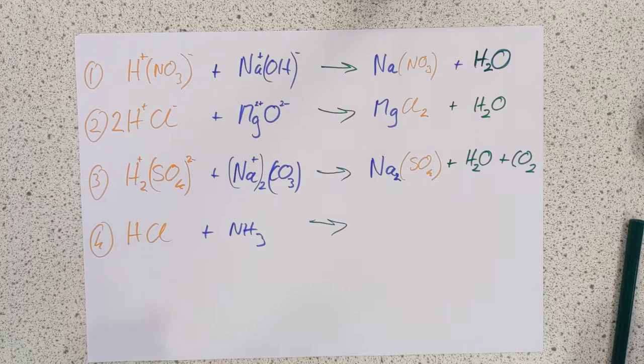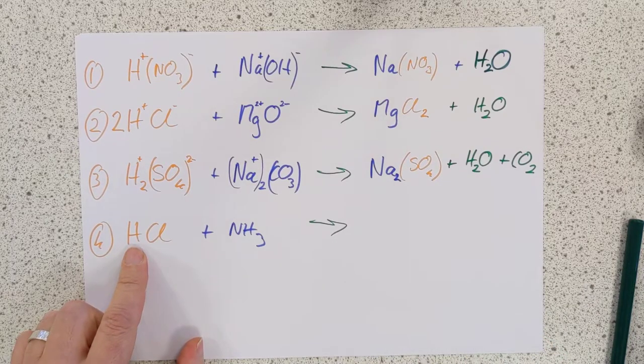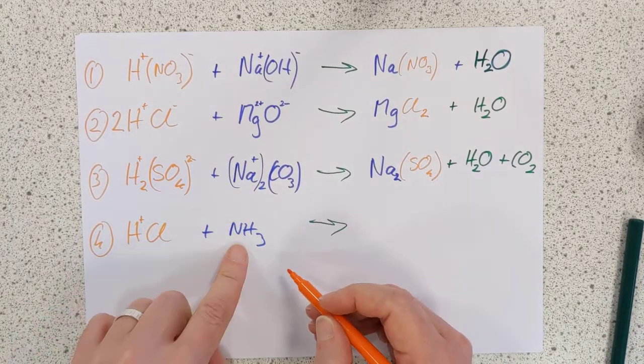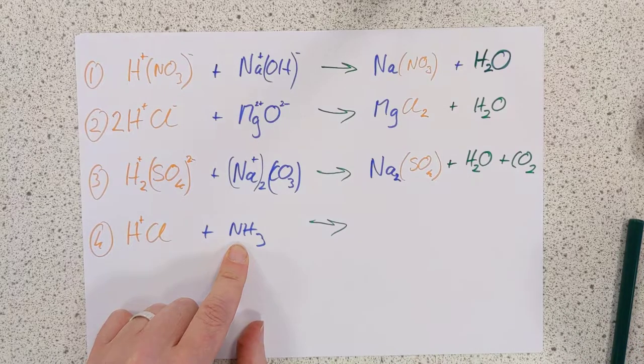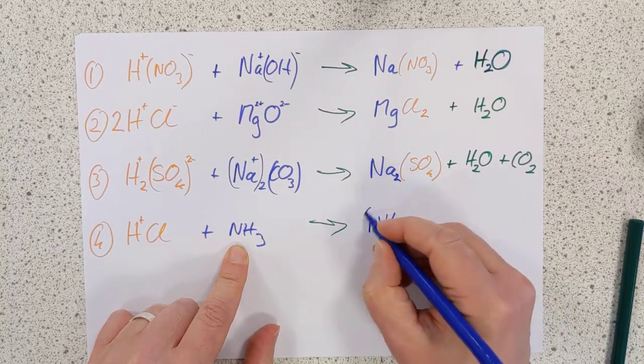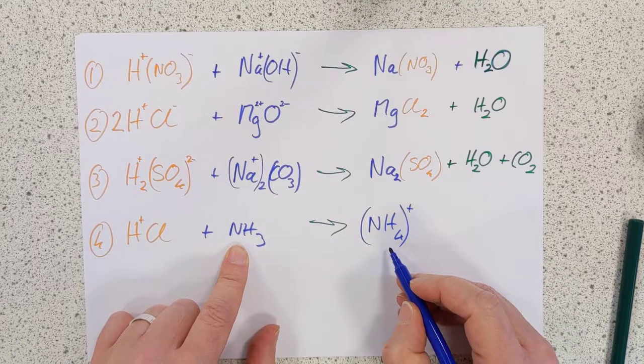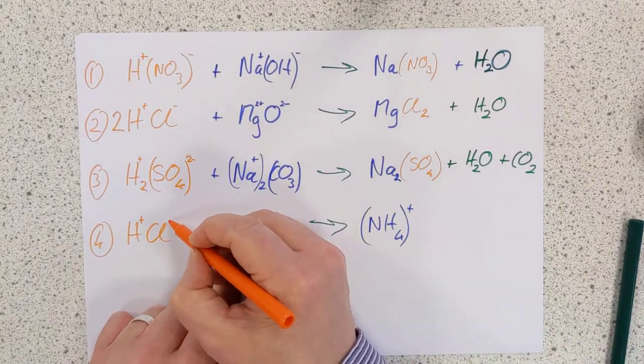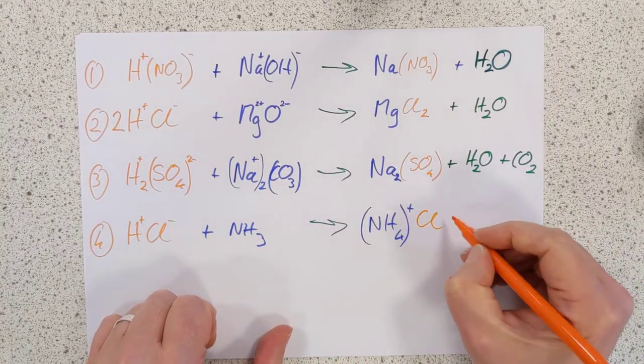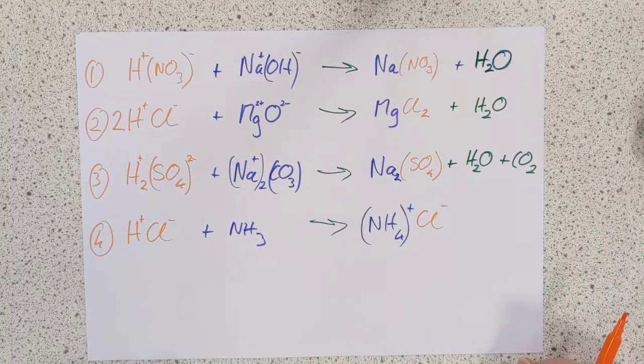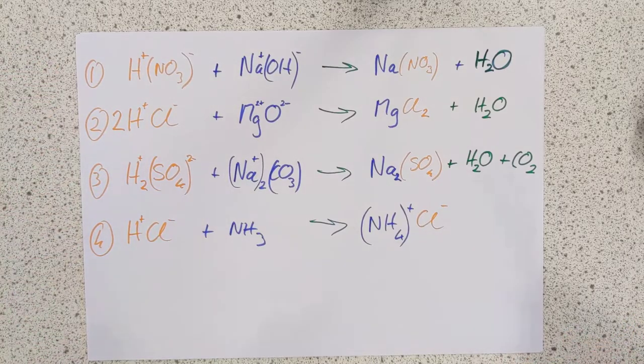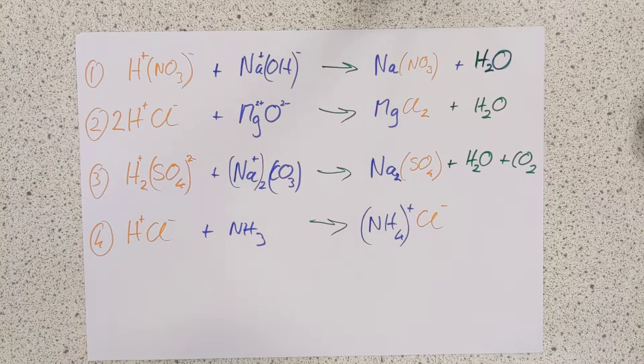This one here is going to make, I did say, an ammonium salt. So if you're interested, what actually happens is this hydrogen ion here joins up with this neutral ammonia molecule NH3. And you end up making the ammonium ion NH4+, which is unusual in that it's a positive complex ion in our data book. And, of course, they're left over with Cl-, so you end up making ammonium chloride NH4Cl. So there's four examples, guys, of our neutralization reactions.